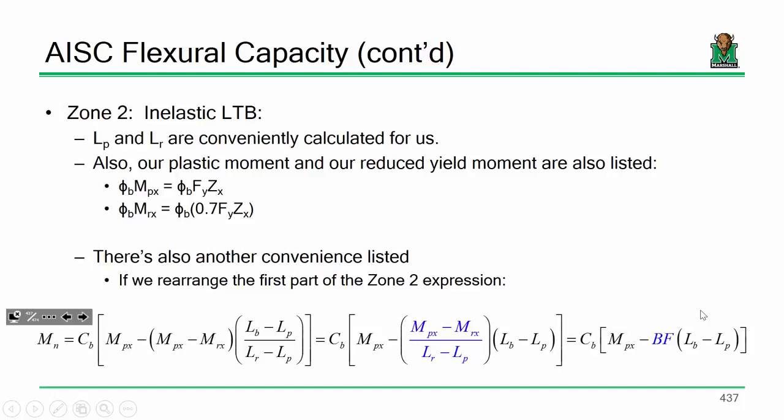Now, if you look at this expression, a little bit of rearrange, you'll see a couple of things. So if you look at table 3.2, you'll see that phi M_P and M_R are listed. There's also another term that's listed called B_F. Or B_F, not B sub F, B_F. Sorry about that.